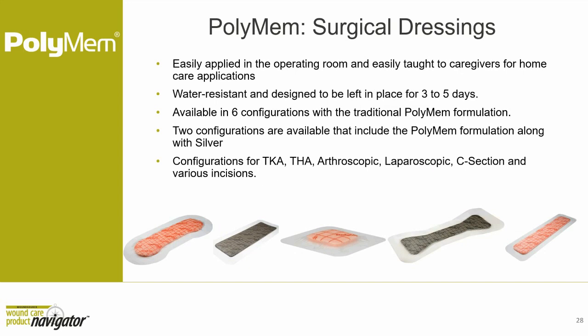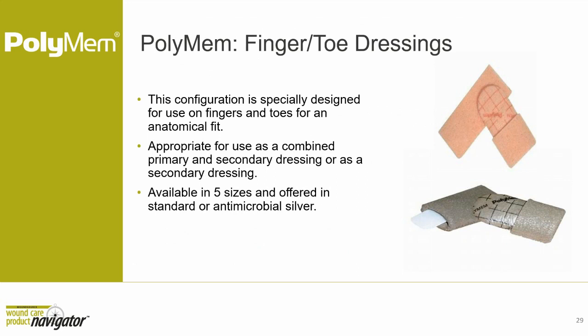Ferris also introduced a line of surgical dressings designed for surgical incisions — easy to apply in the OR and easy to teach caregivers at home. They are water-resistant and can remain in place three to five days, up to seven. Configurations include traditional PolyMEM and silver versions, with designs for specific procedures: C-section, total knee replacement, total hip, arthroscopic and laparoscopic procedures, and other incision types. The finger and toe dressing is specifically designed for anatomical fit on fingers and toes, available in five sizes as a combined primary and secondary dressing, also available in silver.